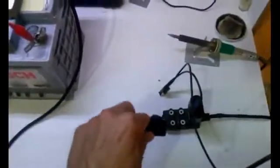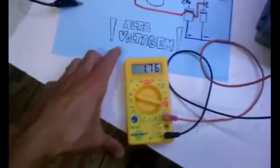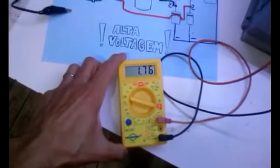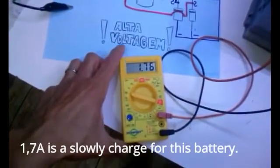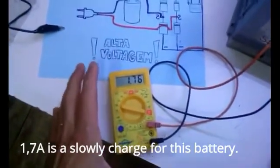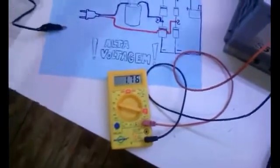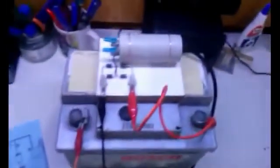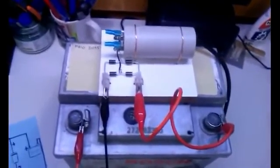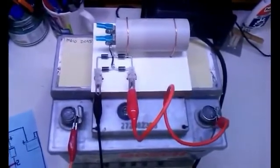We will connect the charger to the source of energy and we have a charging current of 1.7A. This looks good for a slow charge for this car battery. Try to charge your battery to 14.8 or 15 volts, if possible.